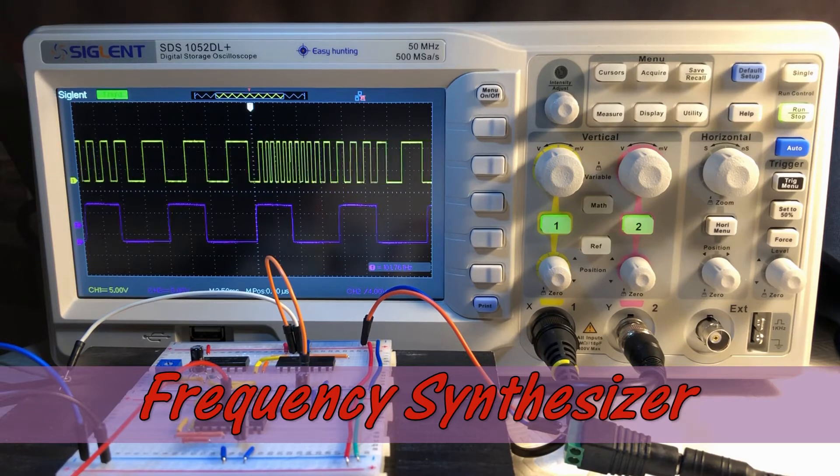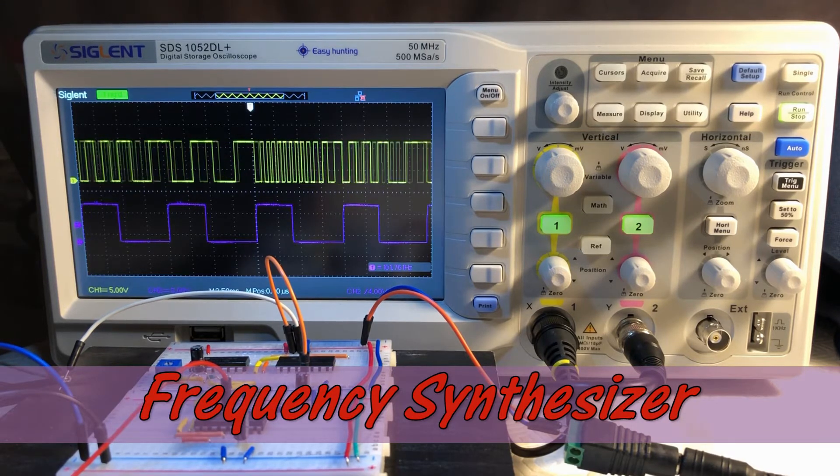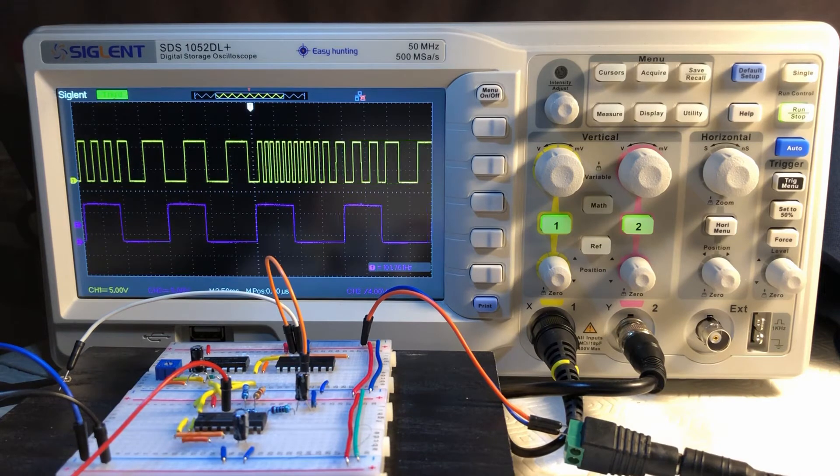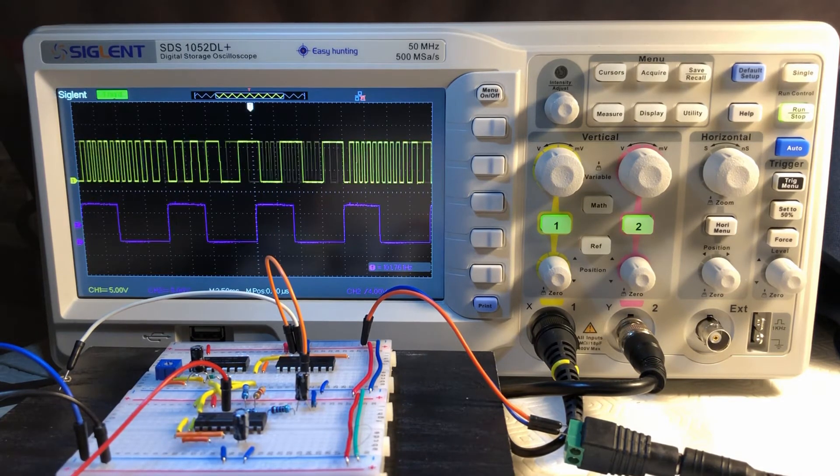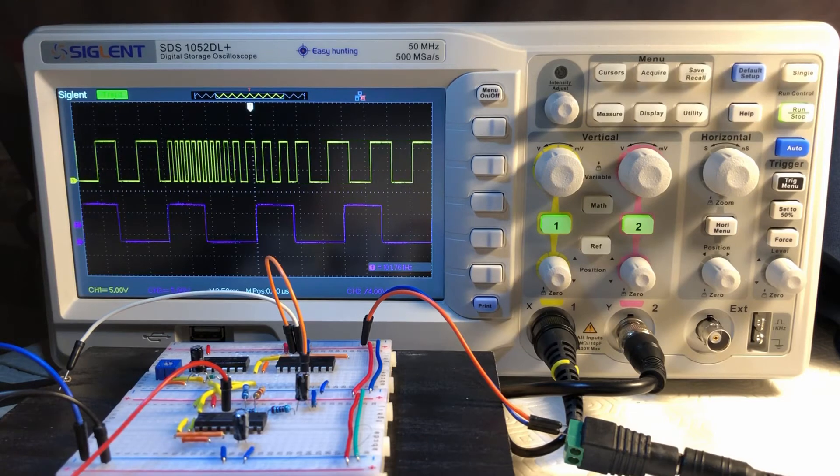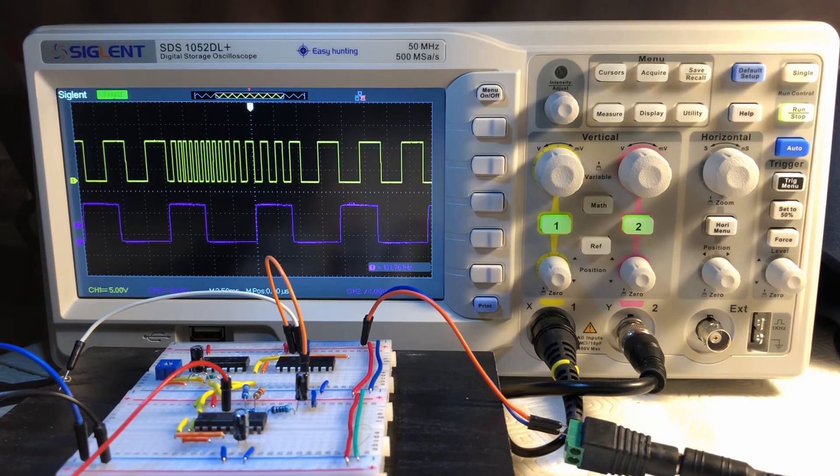The frequency synthesizer circuit is based on the phase locked loop IC 4046 and decade counter 4017. The output of the circuit can give us eight synthesized frequencies.